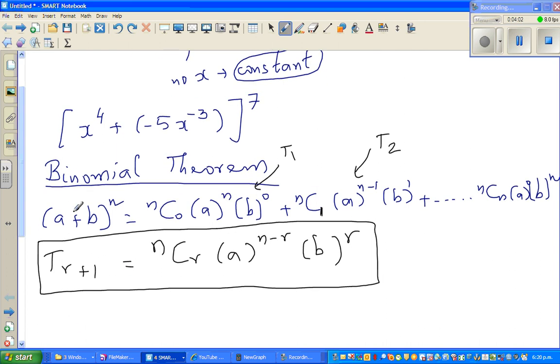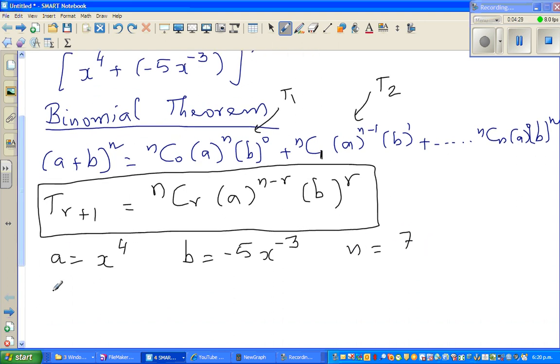So let us compare this general form with the example. So can I compare a with what? Compare a with x to the power 4, and you can compare b with minus 5x to the power minus 3. And your 7 can be compared with n. So let us write this formula. So T sub r plus 1, we don't know r, is n is 7, so it is 7Cr times a, what is a? x to the power 4 raised to 7 minus r, times minus 5x to the power minus 3 to the power r. Is it making sense?